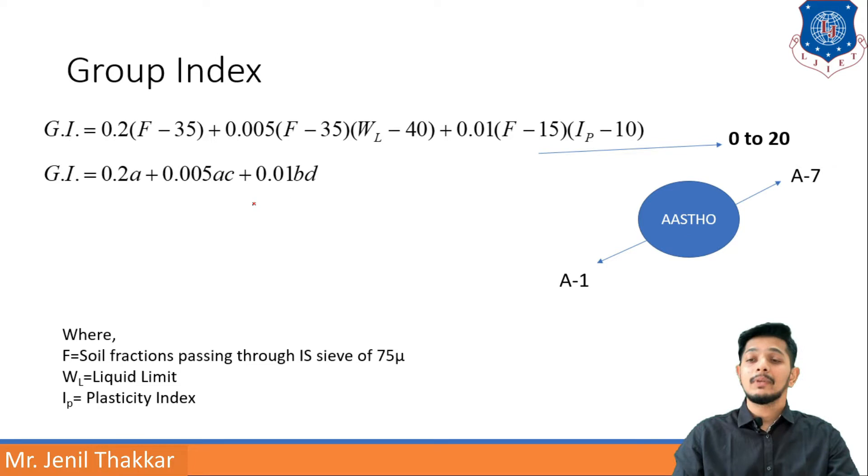A here, F minus 35, is known as A. Same with WL minus 40 is known as C. F minus 15 is known as B and IP minus 10 is known as D. Now GI is generally varying between 0 to 20.